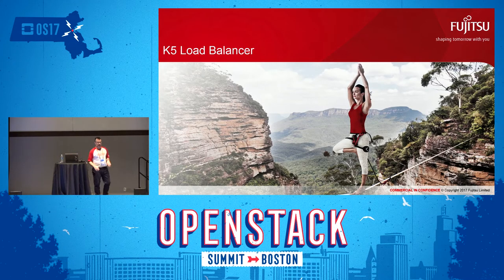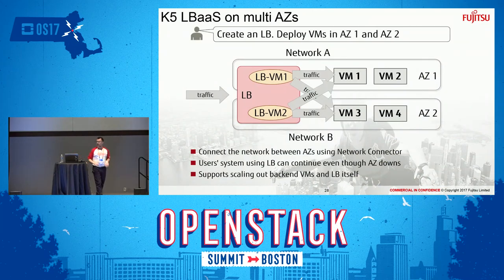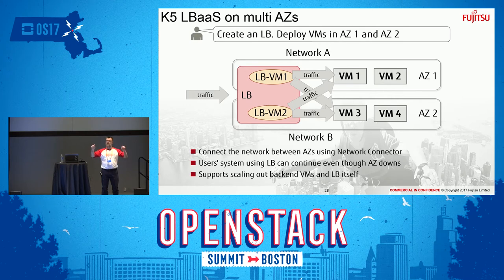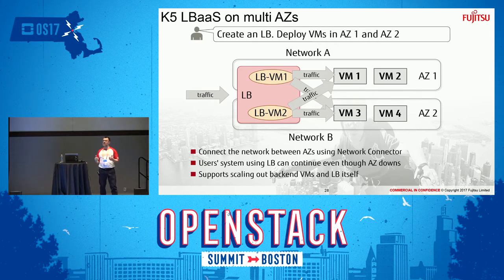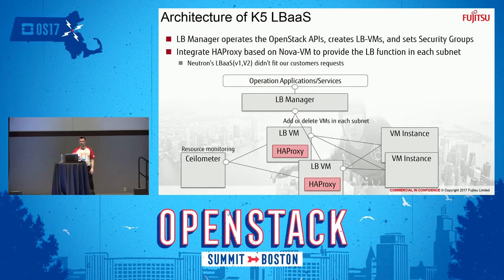K5 load balancers: the challenge was that we moved Neutron below the MAZ layer, so how do we load balance between availability zones? We created a load balance manager. We use a VM-based approach — when you stand up a load balancer working between two availability zones, it creates two VMs in each availability zone to give you HA high-availability connections. We looked at LBaaS v1 and LBaaS v2, but they didn't match our requirements since we were working on top of OpenStack, so we created a new service using the Neutron APIs but sitting on top of it.